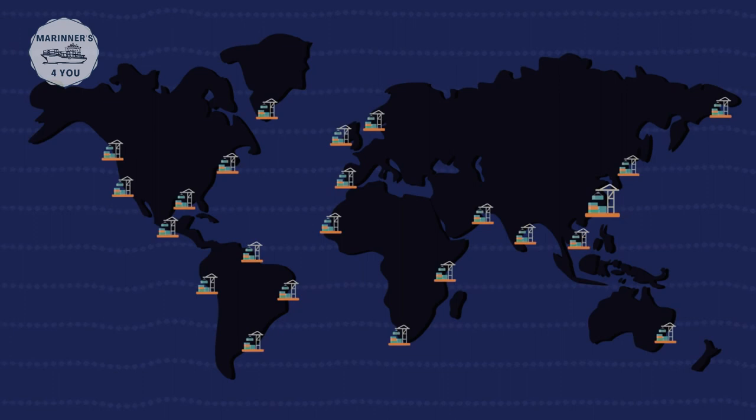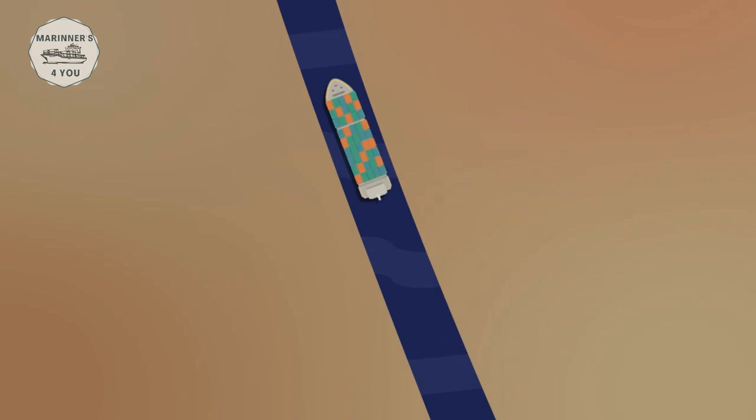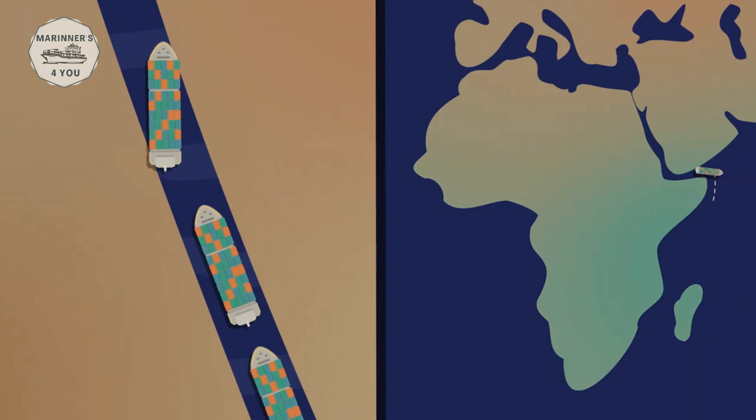In March of 2021, we saw this situation when a mega vessel got stuck and blocked the Suez Canal for six days. All the ships behind it had to wait or had to take the route all around Africa. Indeed, this has caused a big delay and caused loss for many companies.